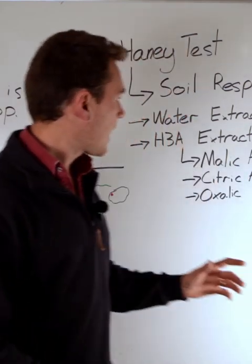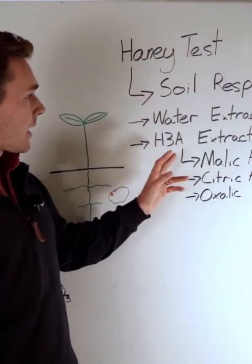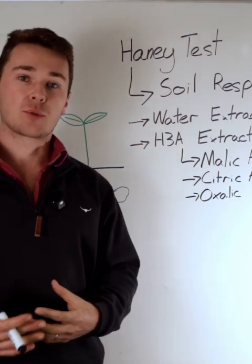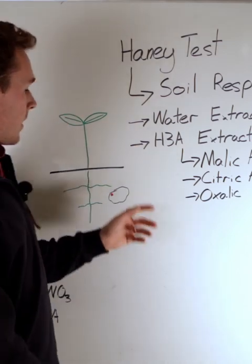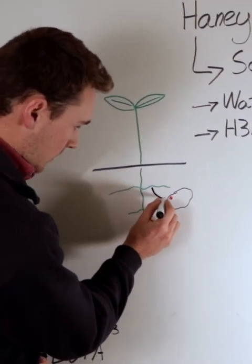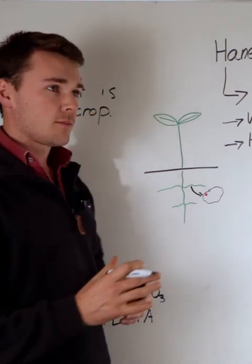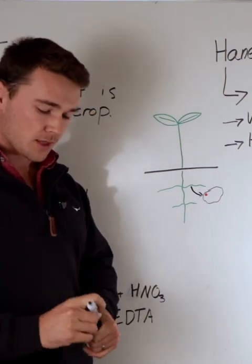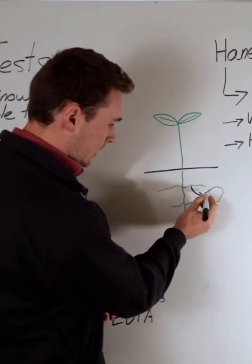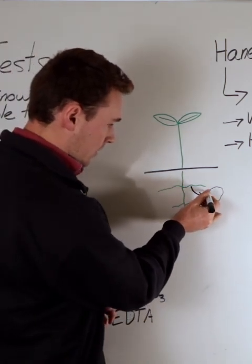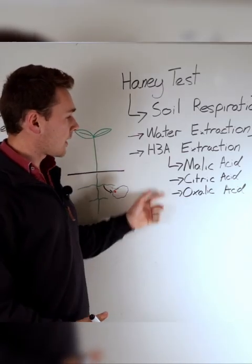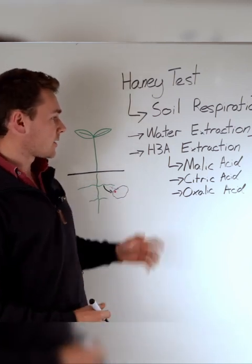When we look at the H3A extraction, it uses three organic acids. These are acids that are actually produced by the plant. The plant releases these organic acids through the roots into the soil. Because it's acidic, it more or less dissolves or breaks apart the bonds, making these minerals available to the plant or soluble. They come out of the mineral component and become available to the plant. That's the idea behind using these three organic acids in the extraction technique.